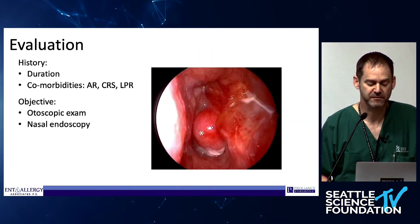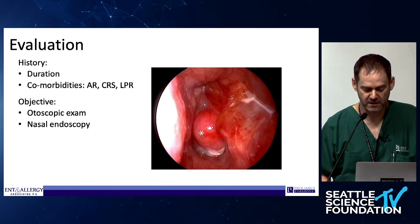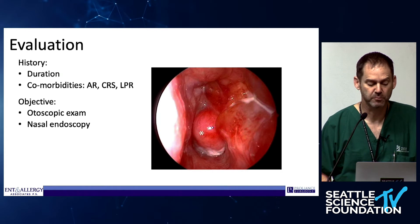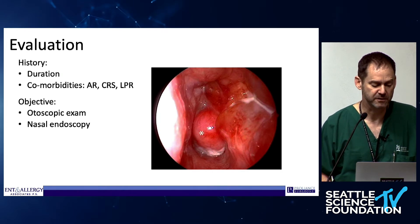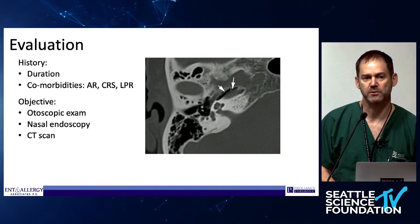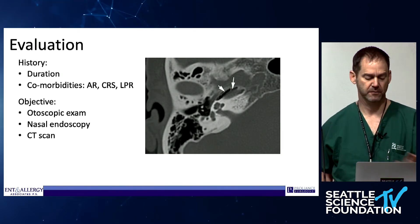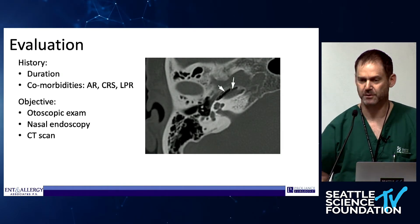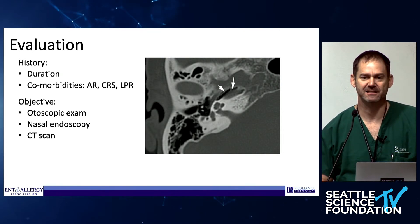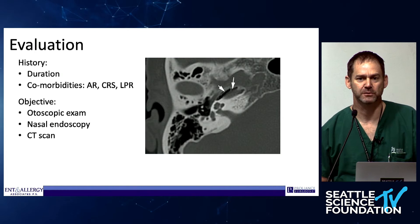Obviously look in the nasopharynx for things like JNA or nasopharyngeal carcinoma — those can all present with anatomic eustachian tube dysfunction. A CT scan is required because you're looking for a dehiscent carotid artery, and that would be a contraindication for balloon dilation.